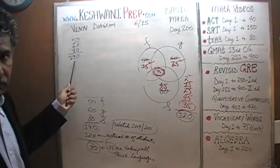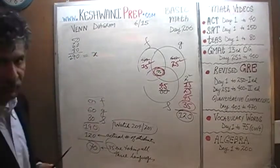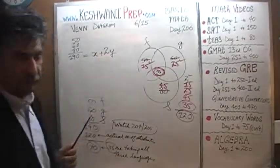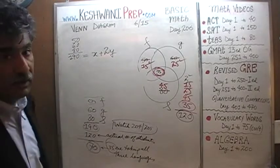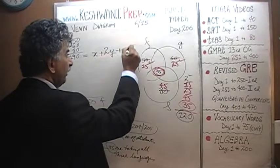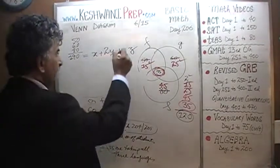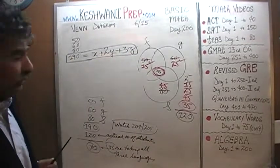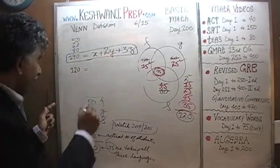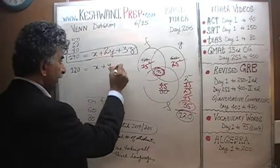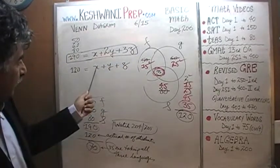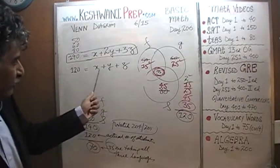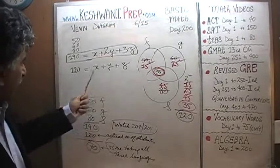This 190 has to equal the number of people studying exactly one language, plus the number studying two languages who have been double counted — so 2y — plus the number studying all three who have been triple counted — so 3z. That's your first equation: 190 = x + 2y + 3z. The actual number of people is 120, which equals people studying exactly one, plus exactly two, plus exactly three languages: x + y + z = 120. That's your second equation.